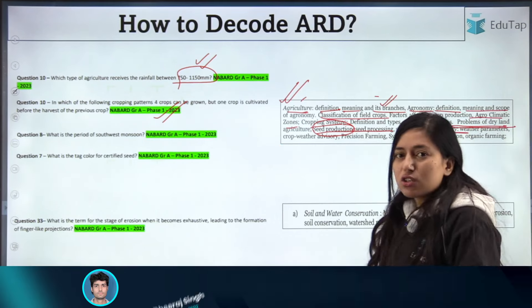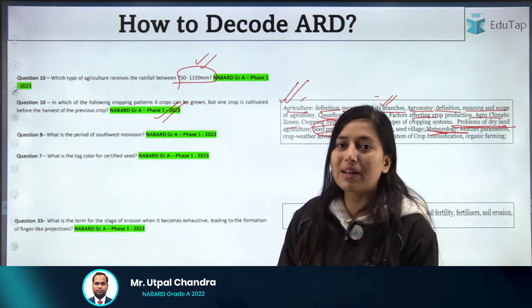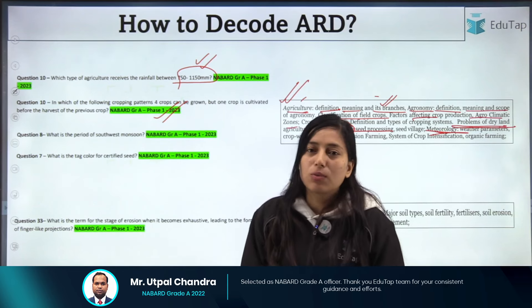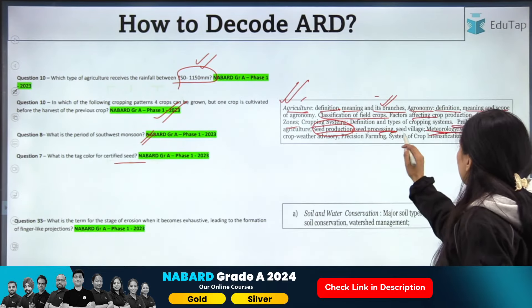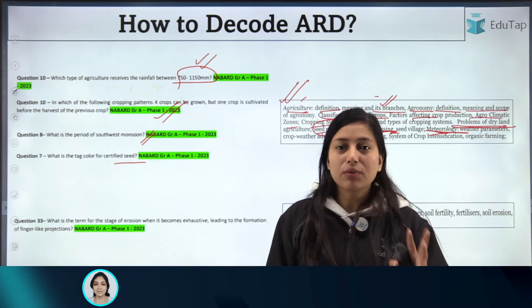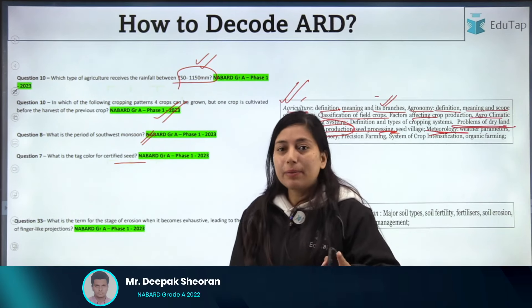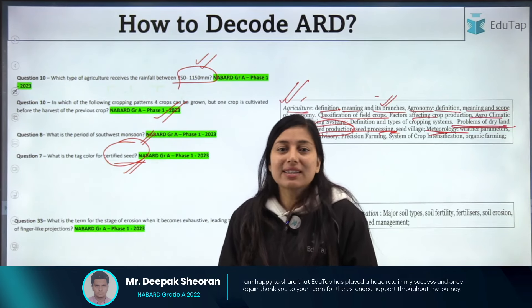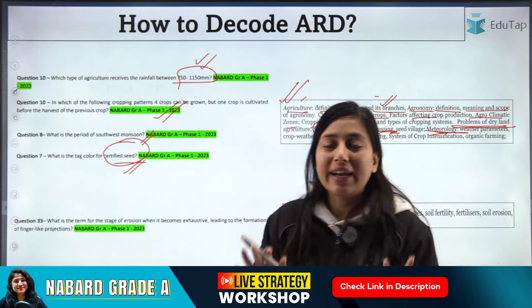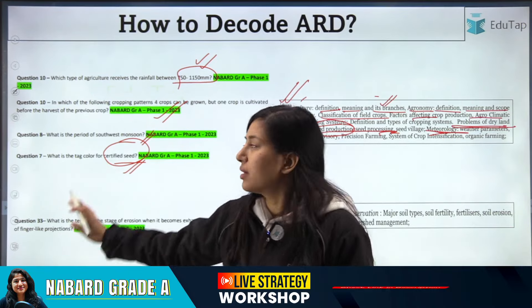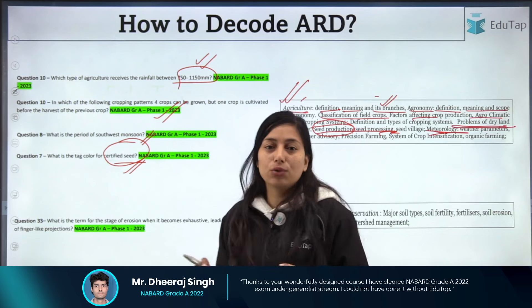When you study agro-meteorology, you'll learn how the Indian subcontinent receives rainfall through monsoons — the southwest monsoon and northeast monsoon — and questions come from that. When you study seeds, you'll learn about the seed certification process: certified seed, registered seed, foundation seed, breeder seed, and nuclear seed. That is the depth of knowledge required — just prepare general notes on each topic, and that is enough to clear the paper, because questions are easy to moderately difficult, which is very doable.